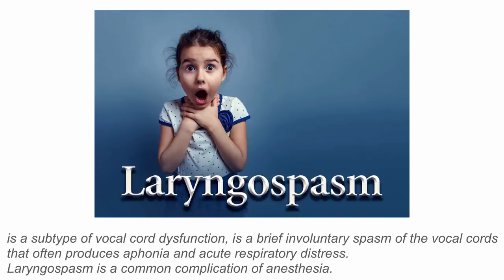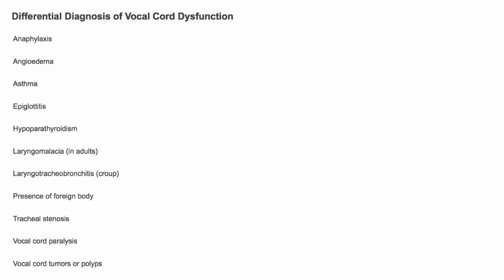Laryngospasm is a common complication of anesthesia when endotracheal tubes are placed down the throat. The differential diagnosis of vocal cord dysfunction includes anaphylaxis, angioedema, asthma, epiglottitis, hypoparathyroidism, laryngomalacia, laryngotracheobronchitis, presence of foreign body, tracheal stenosis, vocal cord paralysis, and vocal cord tumors.